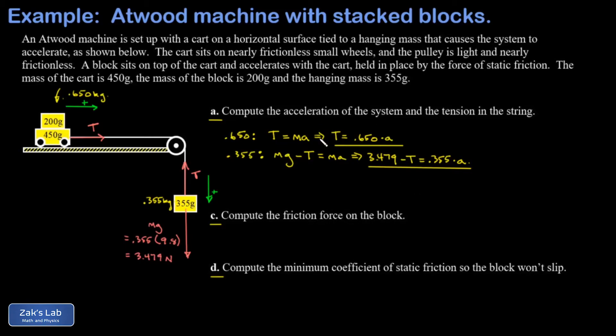And using elimination is the quickest way to solve this system of equations. If I add the left-hand sides, the T's are going to cancel. And that gives me a 3.479. And then if I add the right-hand sides, I get 0.650A plus 0.355A. And this gives me 1.005 times A.